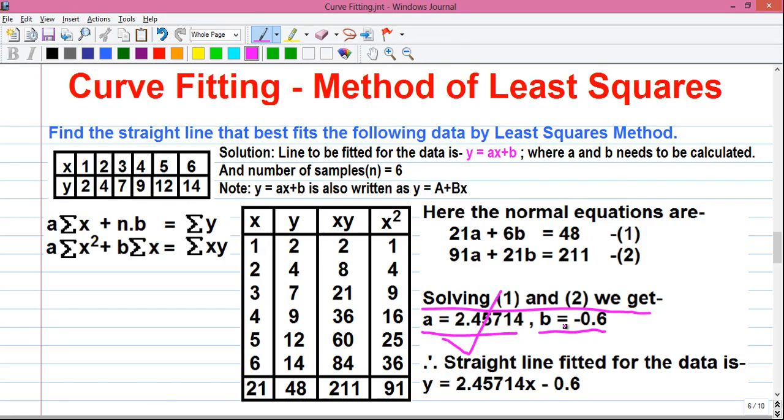So we know the values of a and b. So if we put the values of a and b in this equation, we will get our equation of the line. So the straight line fitted for the data is y = ax. So a is 2.45714 into x plus b, and b is minus 0.6. That is minus 0.6.